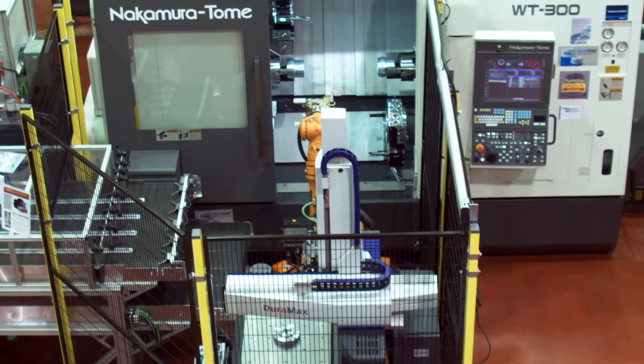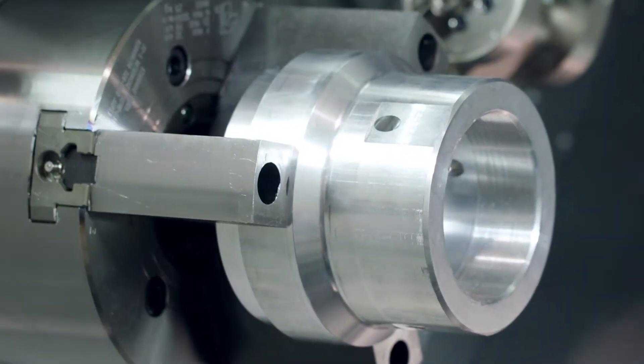This machine is a Nakamura Tome WT300, a multi-task mill-turn machine. It has the ability to manufacture a part complete on one machine. It's a two-turret machine.